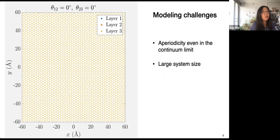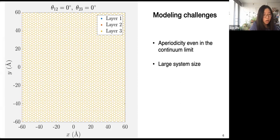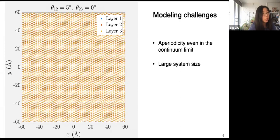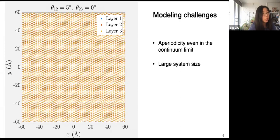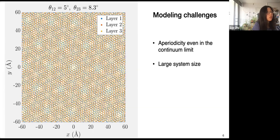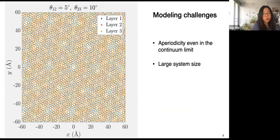The picture is largely the same with a third layer, but now interaction can happen at both pairs of Dirac cones, and the third layer's presence affects coupling between layers. This additional tuning knob makes the system more interesting with extra degrees of freedom to control correlated states and density of states flattening. From a modeling point of view, however, this is a very difficult system because it is aperiodic even in the continuum limit, unlike twisted bilayer graphene.